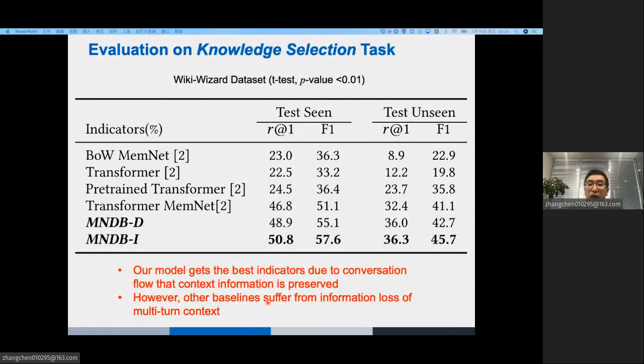This is the evaluation result on the first task, knowledge selection. The evaluation is performed on the wiki wizard dataset. Note that our model has two versions, and the description can be found in our paper. From this table, we can see that our model achieves the best performance. Such a big superiority is due to our flow-based network defined before. Thus, the multi-turn semantic information is preserved. However, other baselines suffer from information loss of multi-turn context.